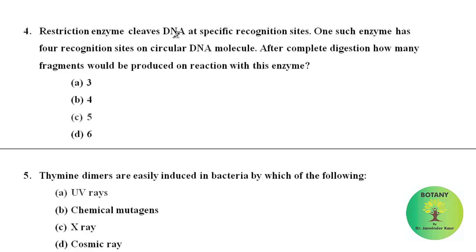Restriction enzyme cleaves DNA at specific recognition sites. One such enzyme has four recognition sites on a circular DNA molecule. After complete digestion, how many fragments would be produced? Since the enzyme has four recognition sites on a circular DNA, it will cleave the DNA and break it into four fragments.